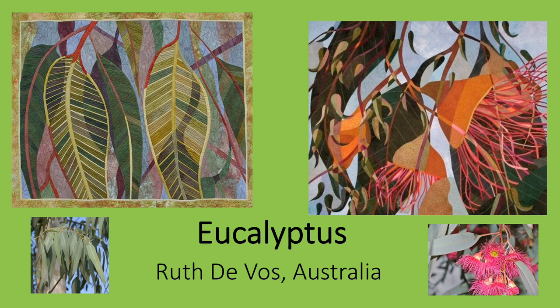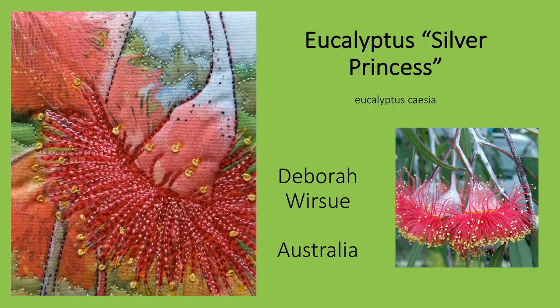I have found that eucalyptus leaves and flowers are often depicted by Australian quilters. I think DeVos has used appliqué very effectively to capture both the leaves and blossoms in these two small quilts. This is another Australian quilter's depiction of the eucalyptus blooms. Deborah Wursue captured a specific variety of eucalyptus, silver princess. She has used hand-painted fabric and stitchery to capture the blooms' pink stamens. Her embroidered French knots work perfectly for the yellow anthers on their tips.